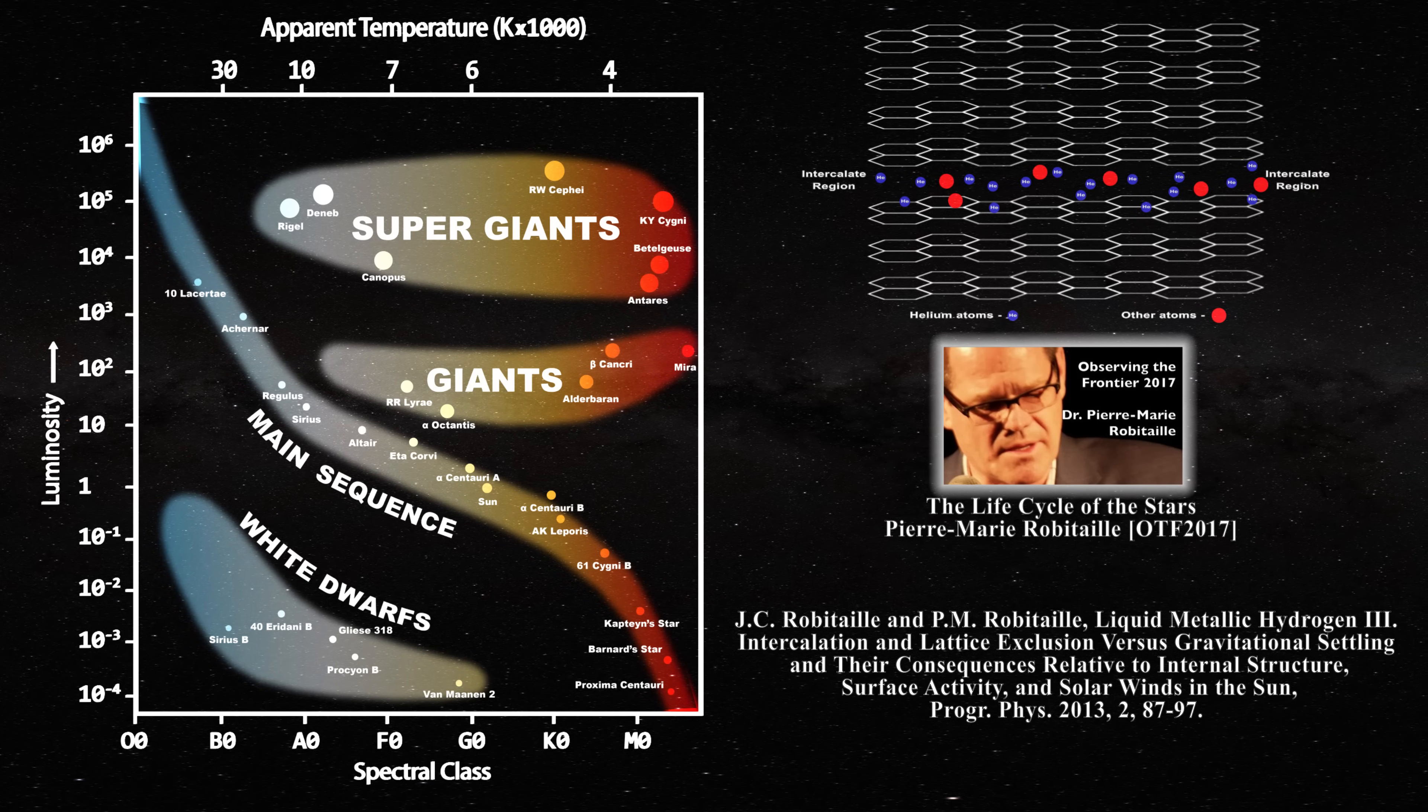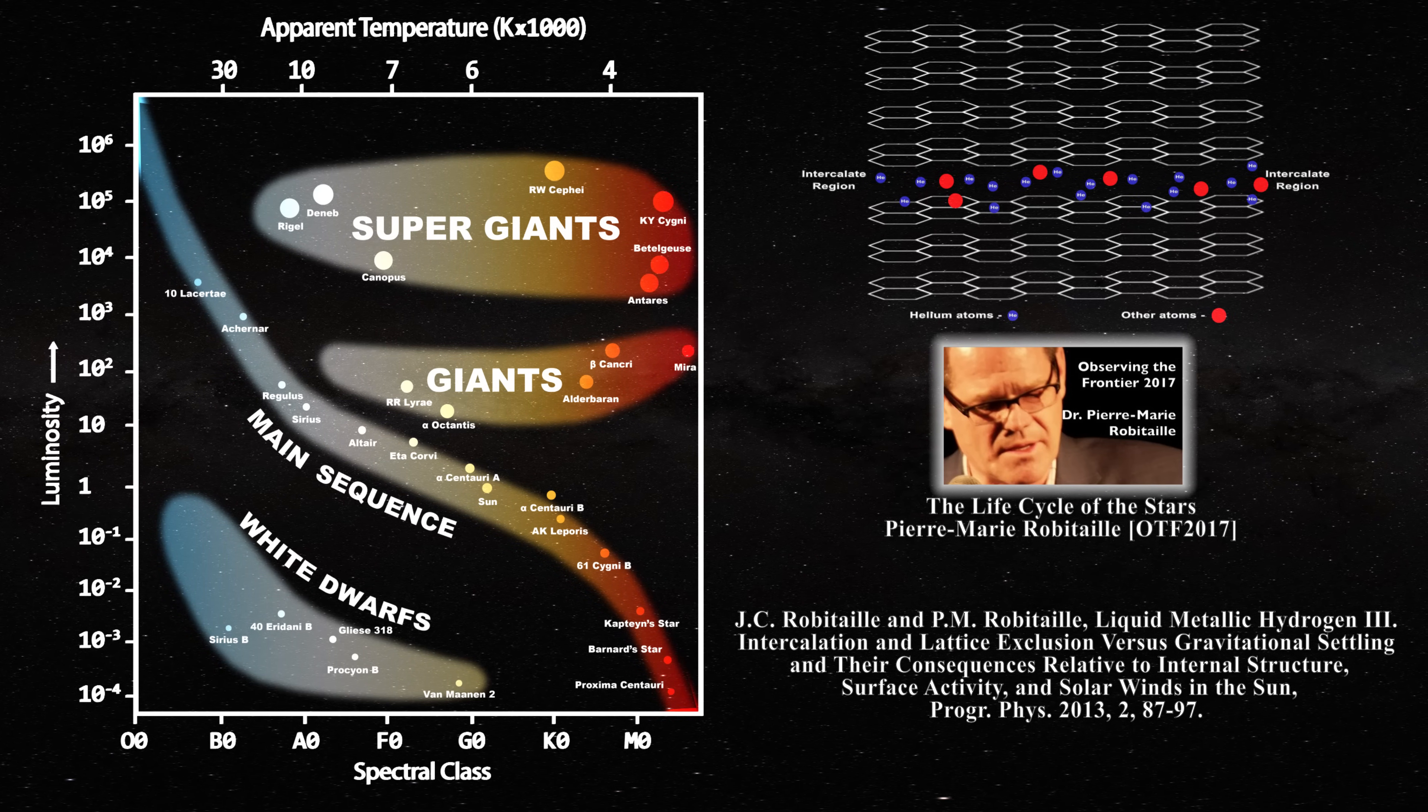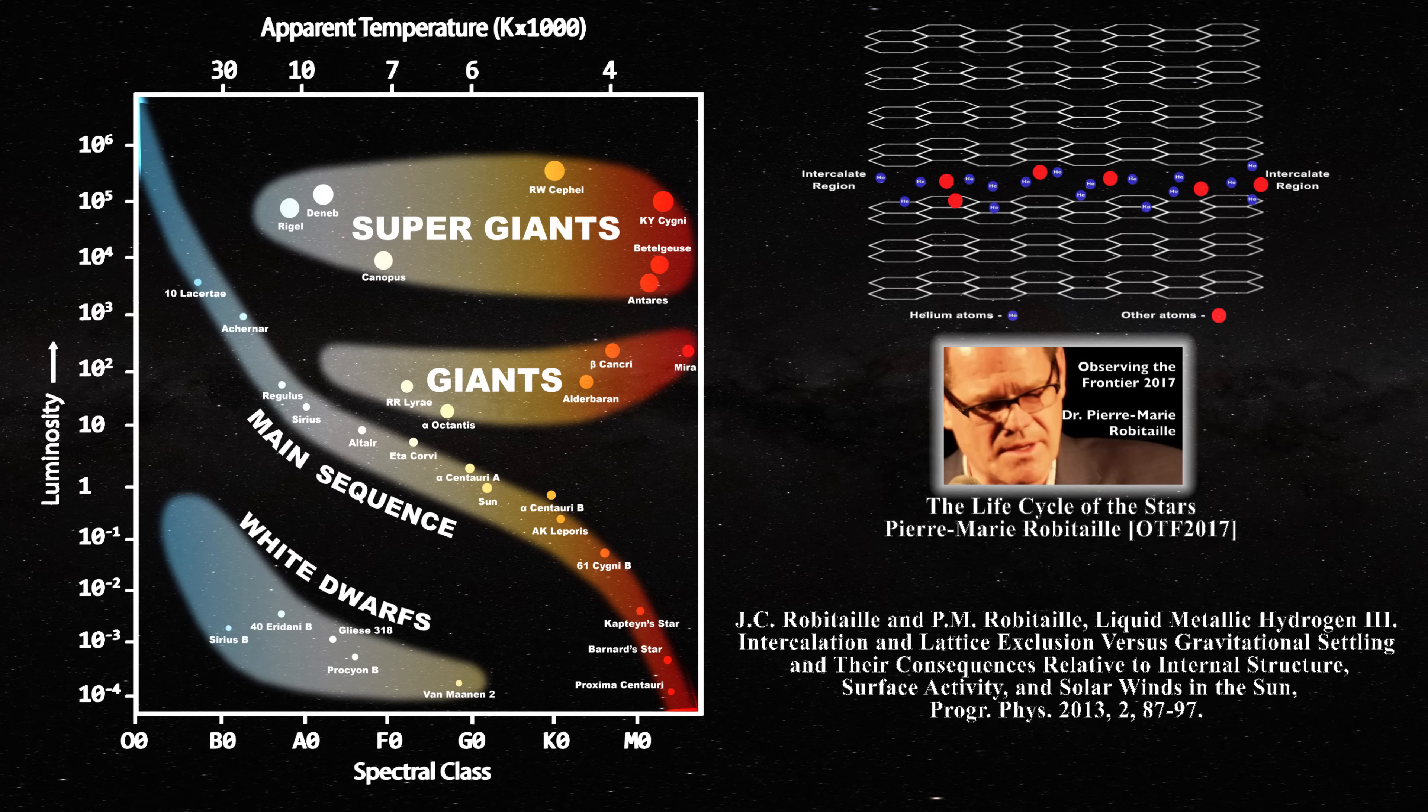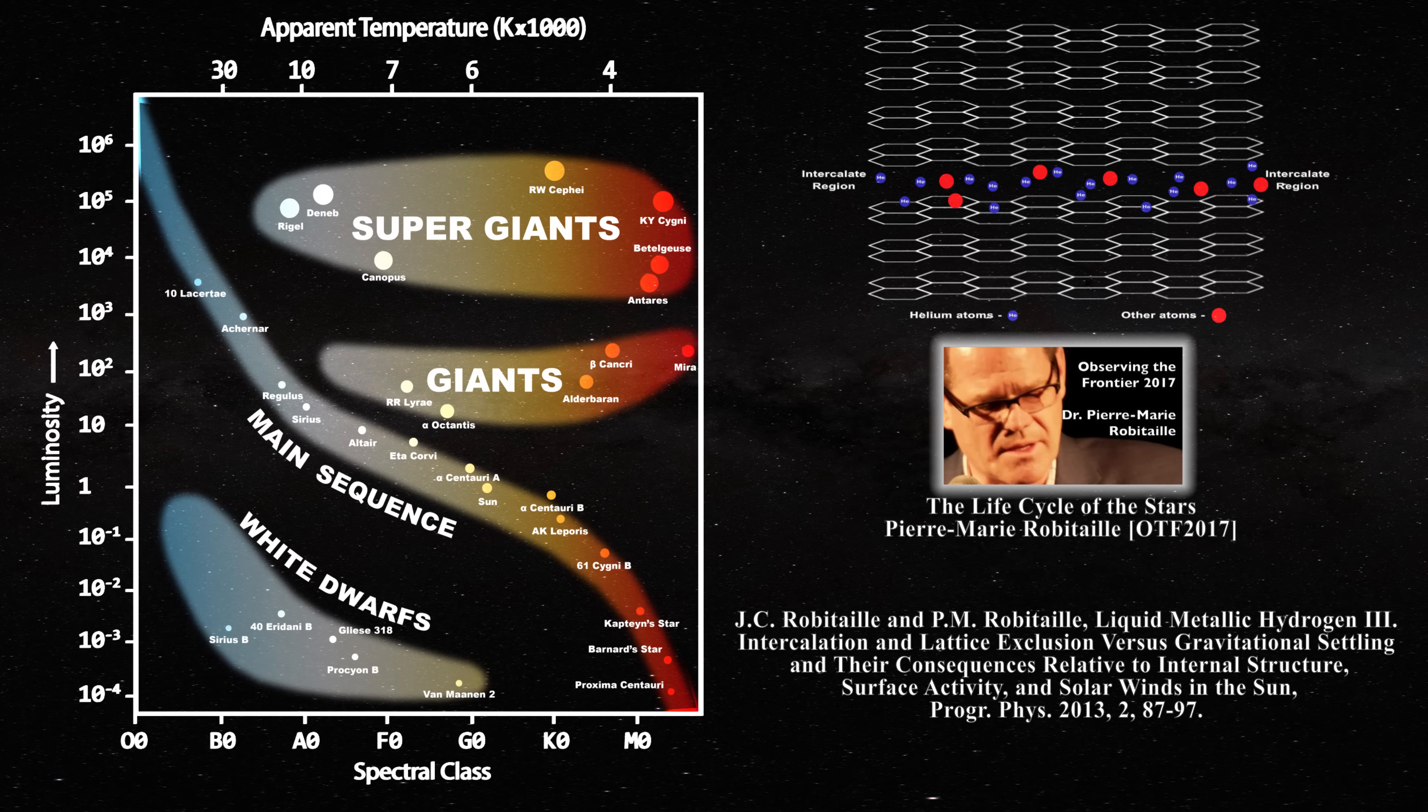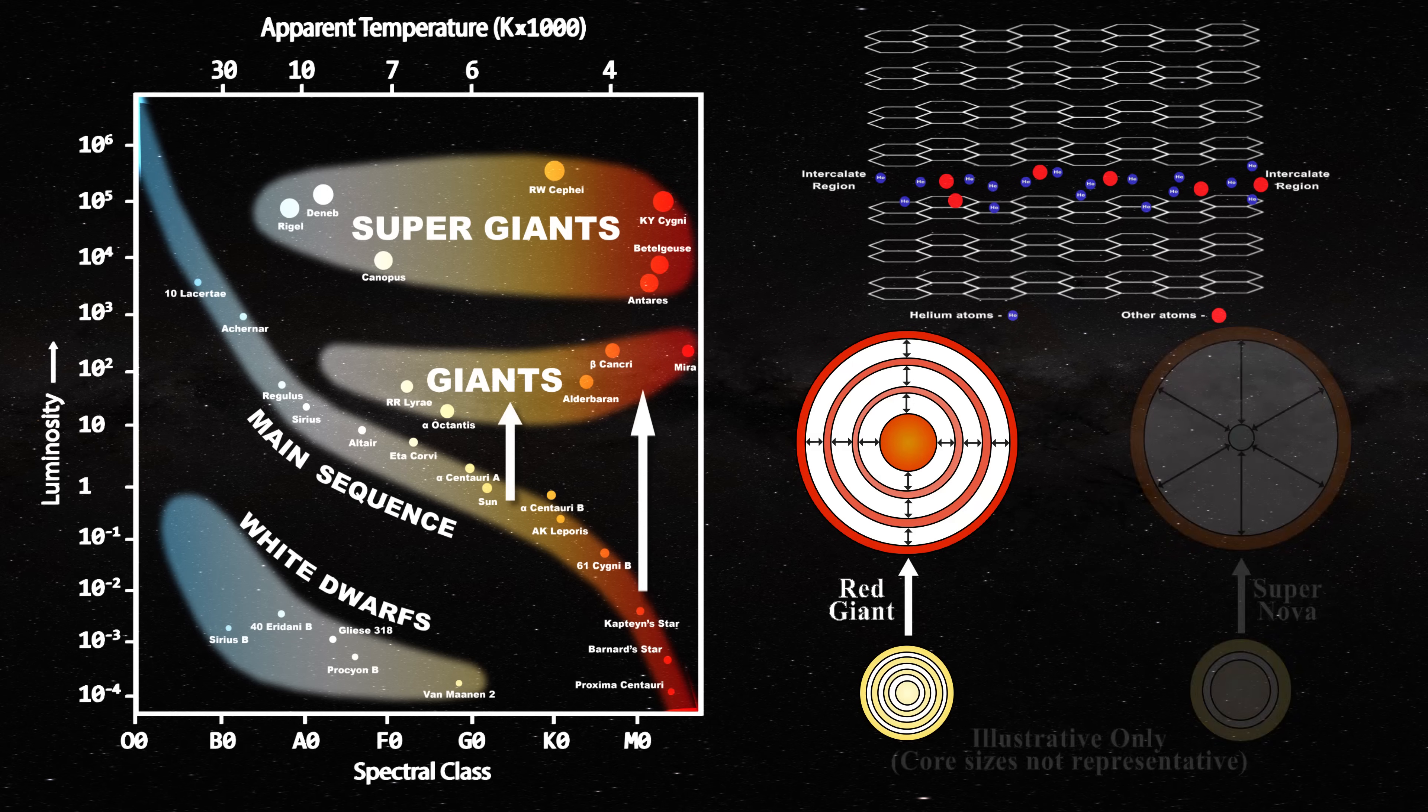When the star is stable, these non-hydrogen atoms are packed much like in a solid. However, if a star experiences a disturbance or external shock, then the intercalate atoms can adopt a gaseous phase. The intercalate regions expand and form either red giants or supernovae.